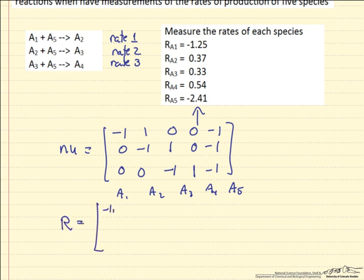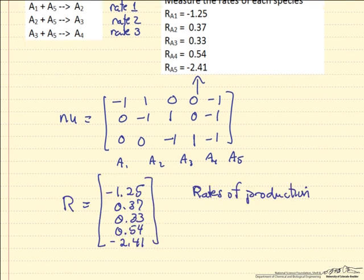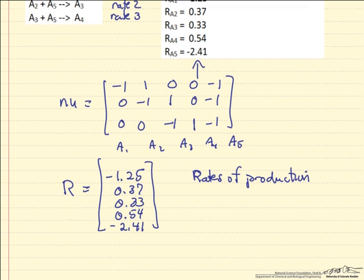And then we are going to define the matrix of rates as just being these rates that are indicated here, so the matrix with these five rates in it.